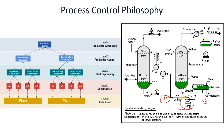Similarly, if a PT shows the discharge pressure going high-high, the pump should be tripped; otherwise the pump internals and the line could be damaged. All this information must be provided in the process control philosophy so the DCS operator understands these interlocks when operating the plant.